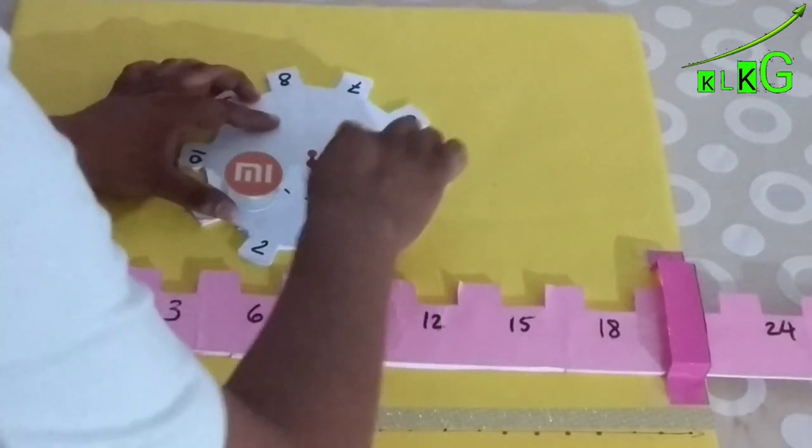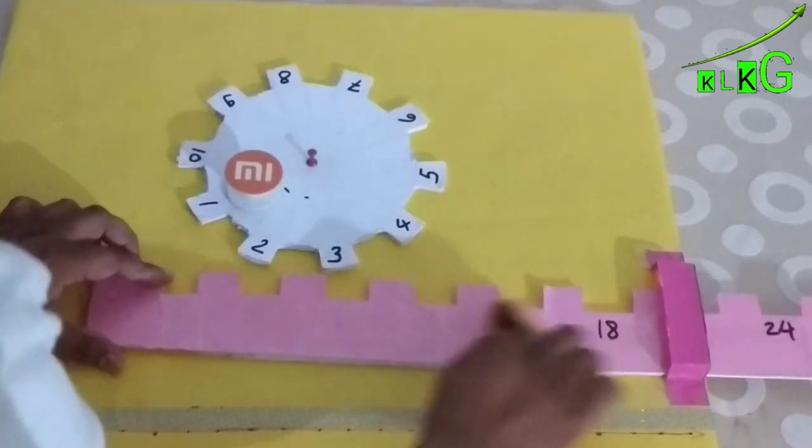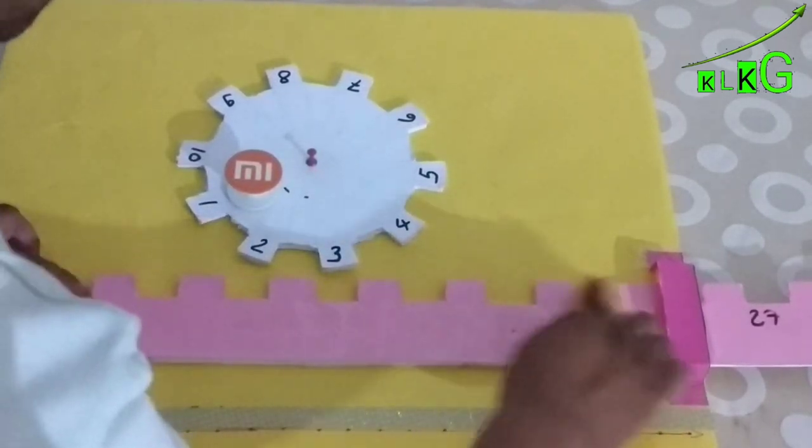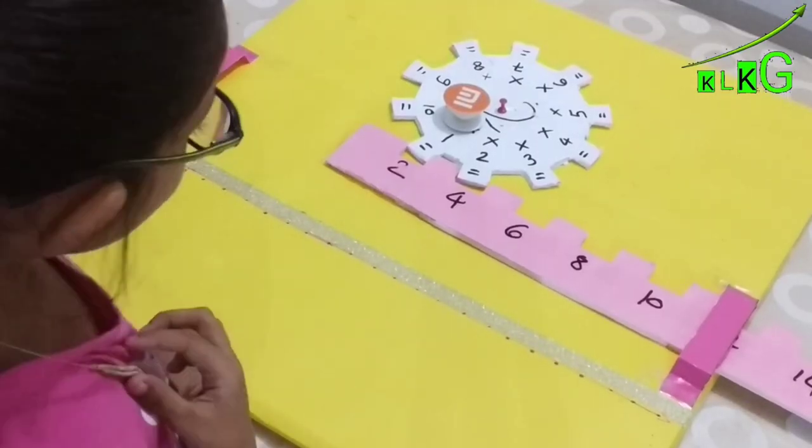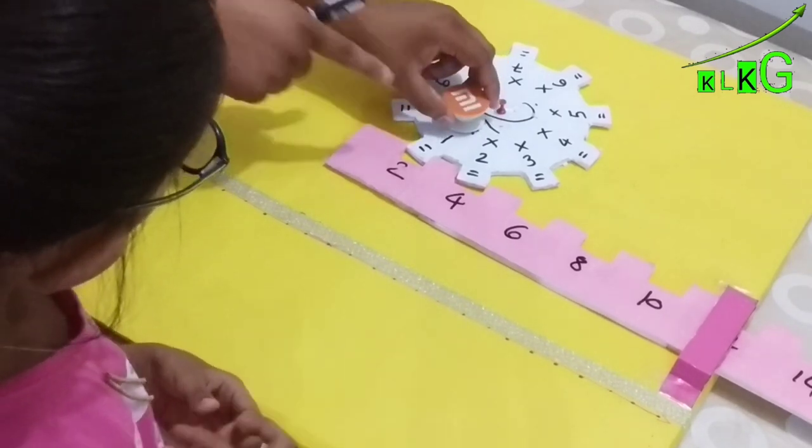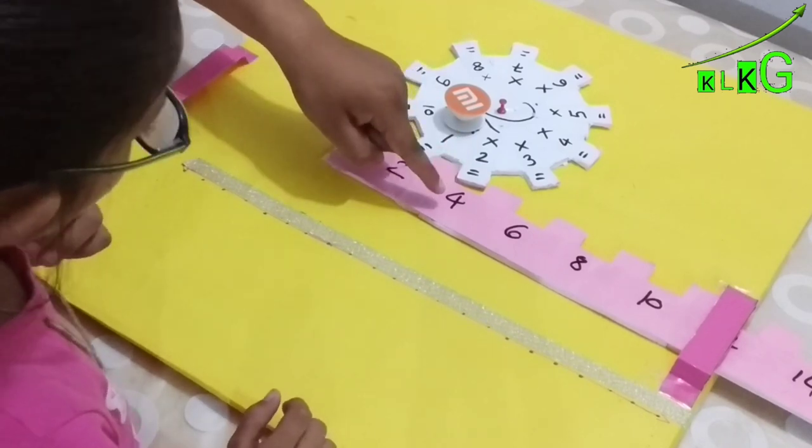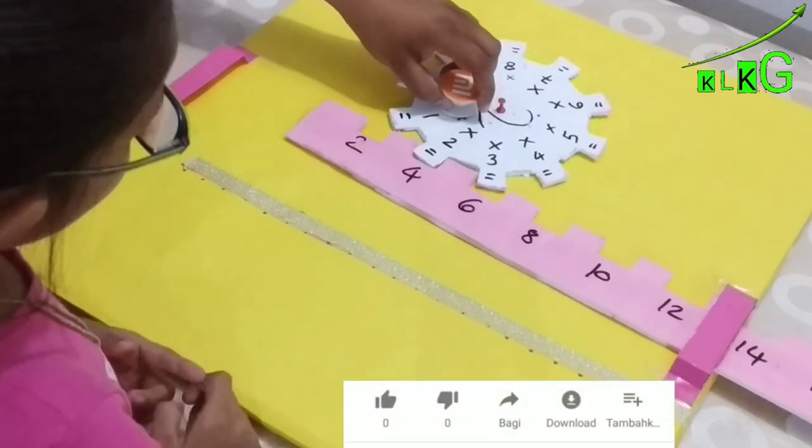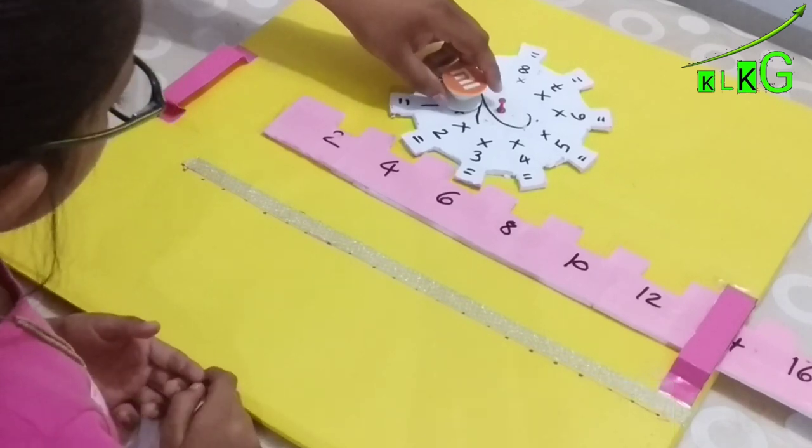Now friends, see, as we have used cello tape in the center and the strip, we can erase it and then we can use different types of tables. As I wanted to teach table of two, I just wrote the table like this. And then the child will read the table and she will play and enjoy the multiplication, and I hope she will learn well. So this is how we are going to make the project.